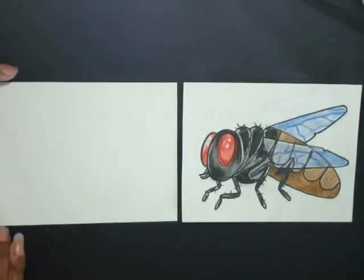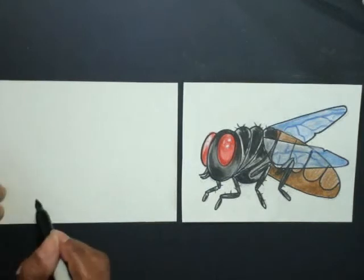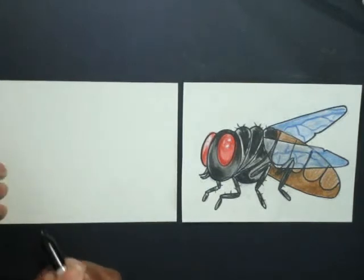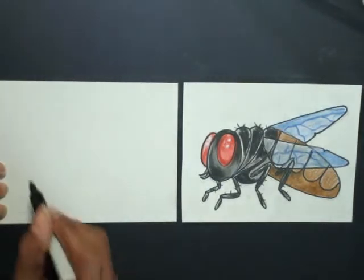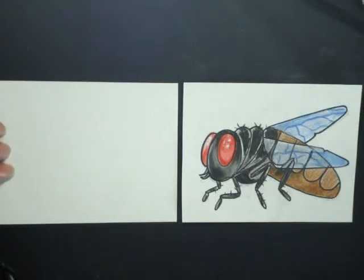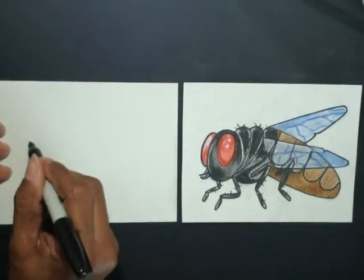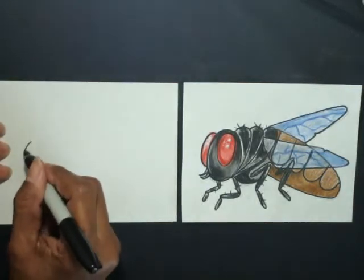We're going to hold the paper landscape, so make sure you hold it horizontal and not vertical. The first shape we're going to draw is going to be an oval on the left side of your paper.